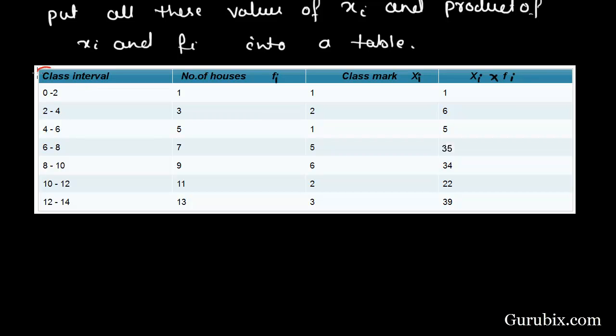First column is class interval. Second column is number of houses, which is our fi. Third column is class mark, which is our xi. And the fourth column is xi fi, which is the product of xi with their corresponding fi.